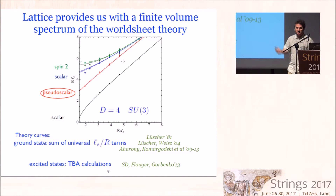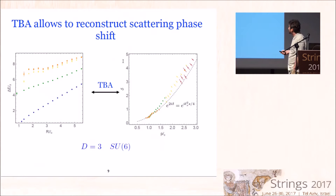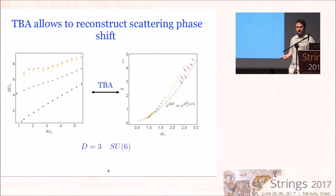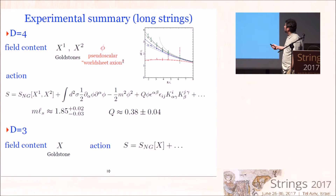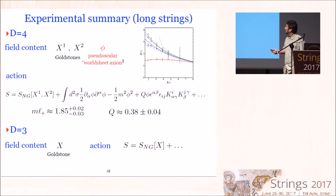One can go from this finite volume spectrum and extract, using thermodynamic Bethe ansatz techniques, scattering phase shifts on the worldsheet. To summarize what we currently know from these measurements for long strings, both for d=4 and d=3: in d=4 we see three modes. Two are the obvious translational Goldstone excitations of the string, and the third is a massive pseudoscalar mode. We have a measurement of its mass in string units and the leading order coupling of this mode to string Goldstone excitations.